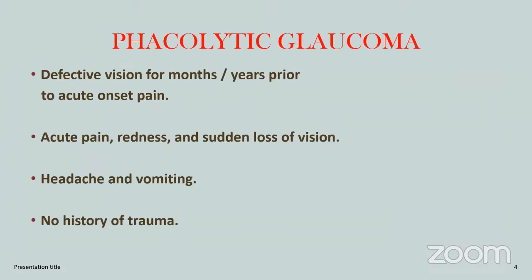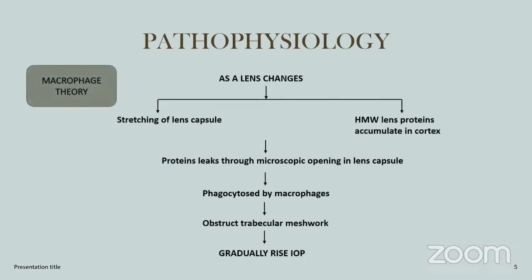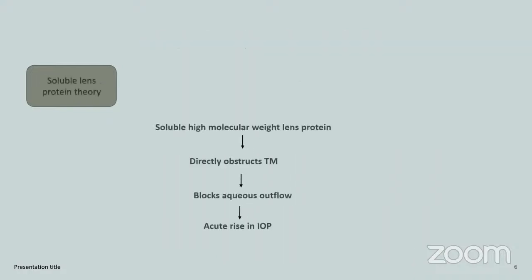Phacolytic glaucoma: there is defective vision for months or years prior to acute onset of pain. There is no history of trauma, but there is acute pain, redness, sudden loss of vision, and maybe headache and vomiting due to increased IOP. There are two theories. First is the macrophage theory: as the lens ages, the stretching of the lens capsule causes high molecular weight lens proteins to accumulate in the cortex and leak through microscopic openings, get phagocytosed by macrophages, obstruct the trabecular meshwork, and gradually raise IOP. Second is the soluble lens protein theory: high molecular weight soluble lens proteins directly obstruct the trabecular meshwork, block aqueous flow, and cause acute rise of IOP.